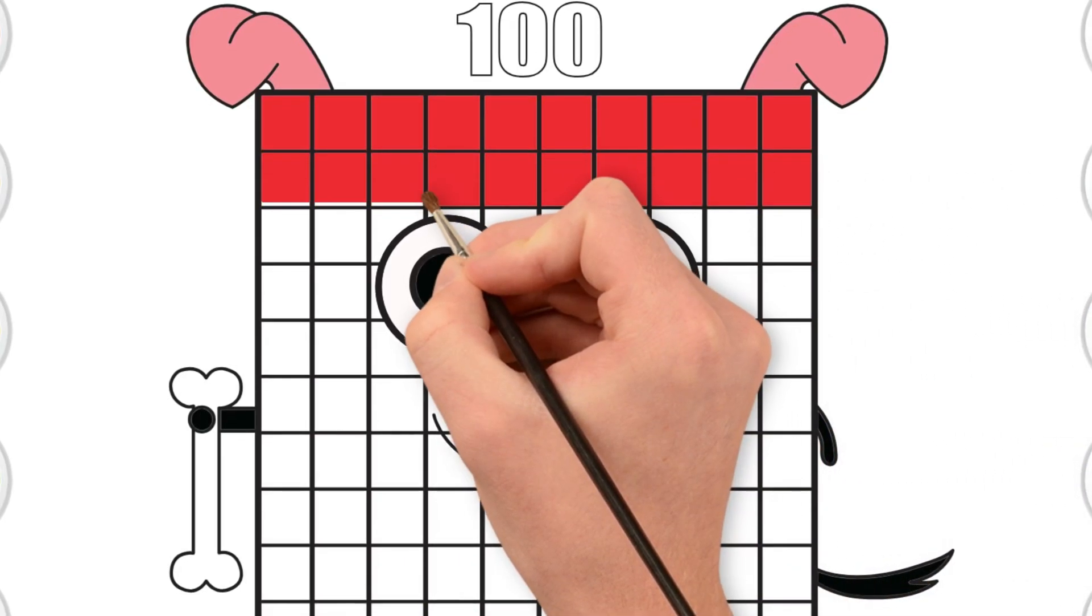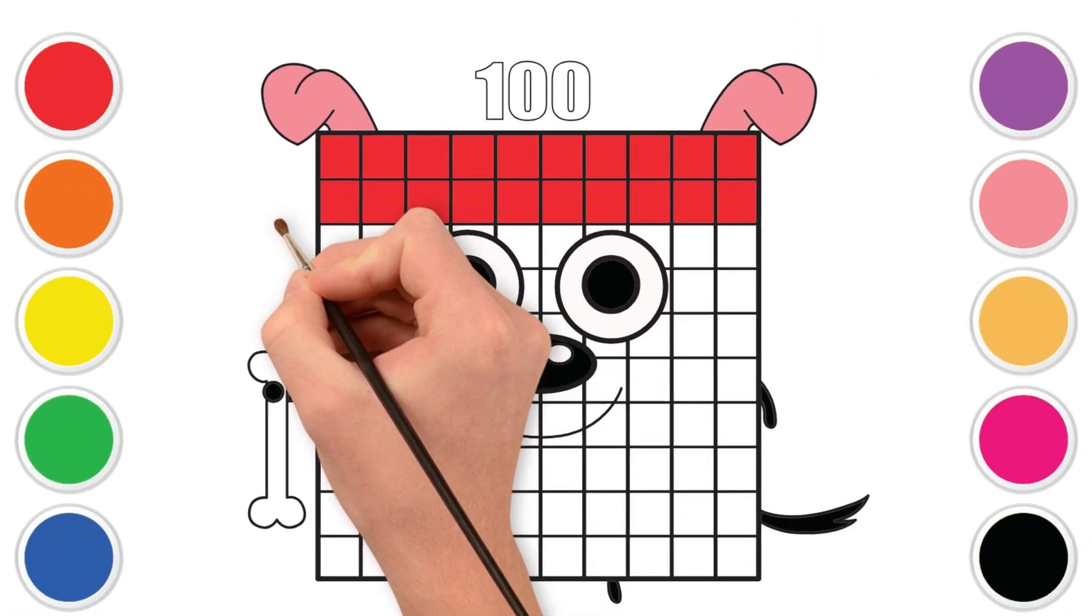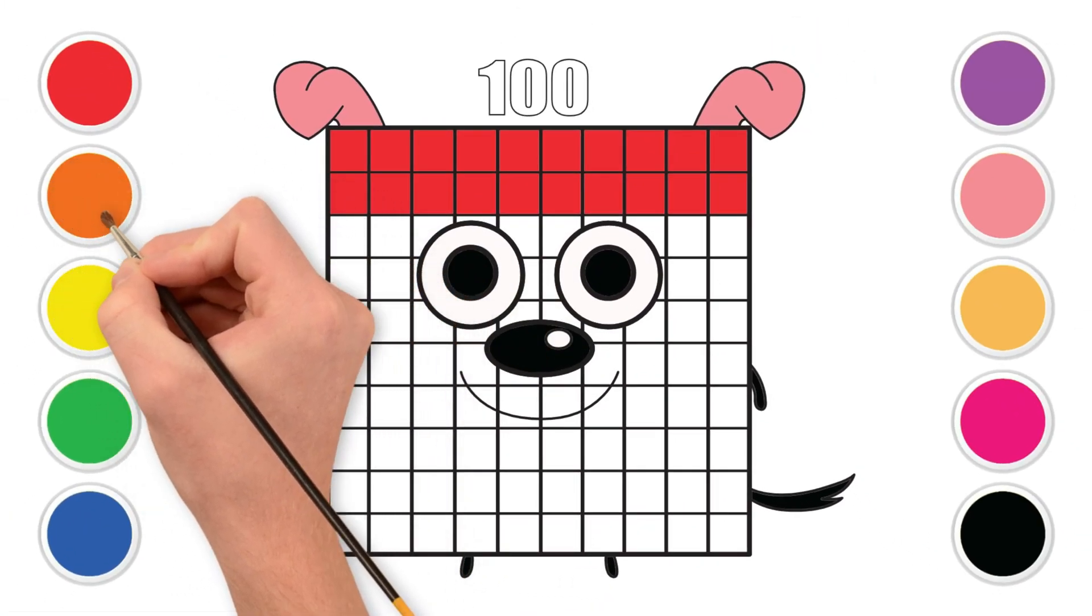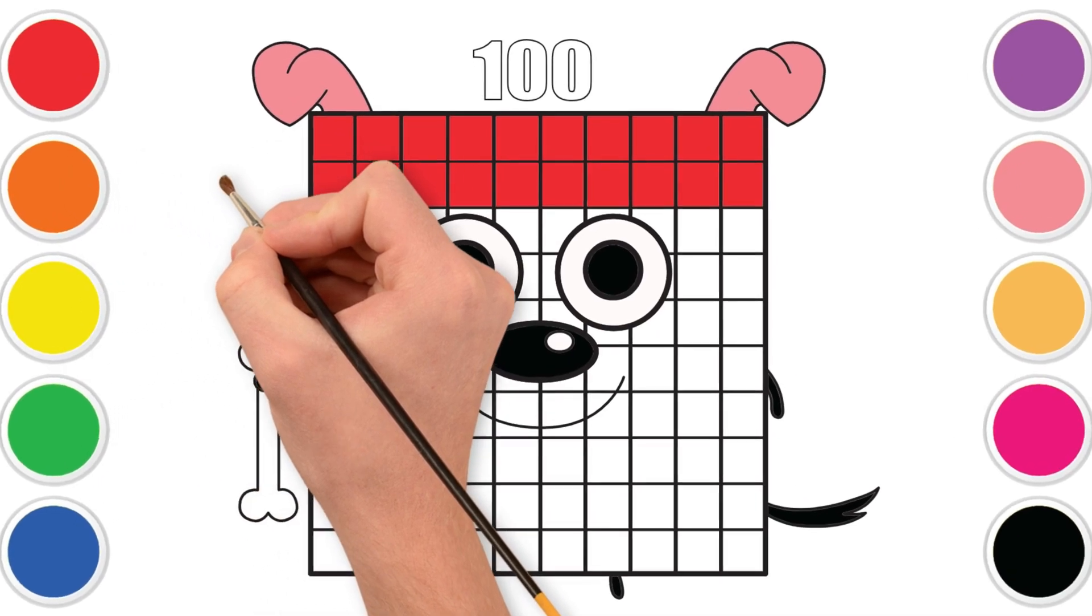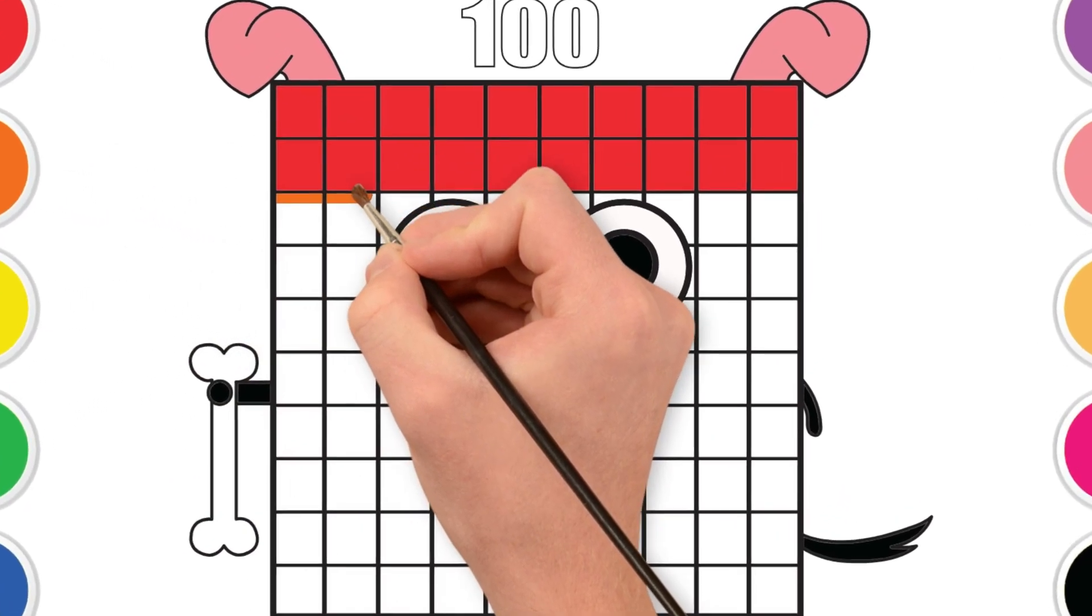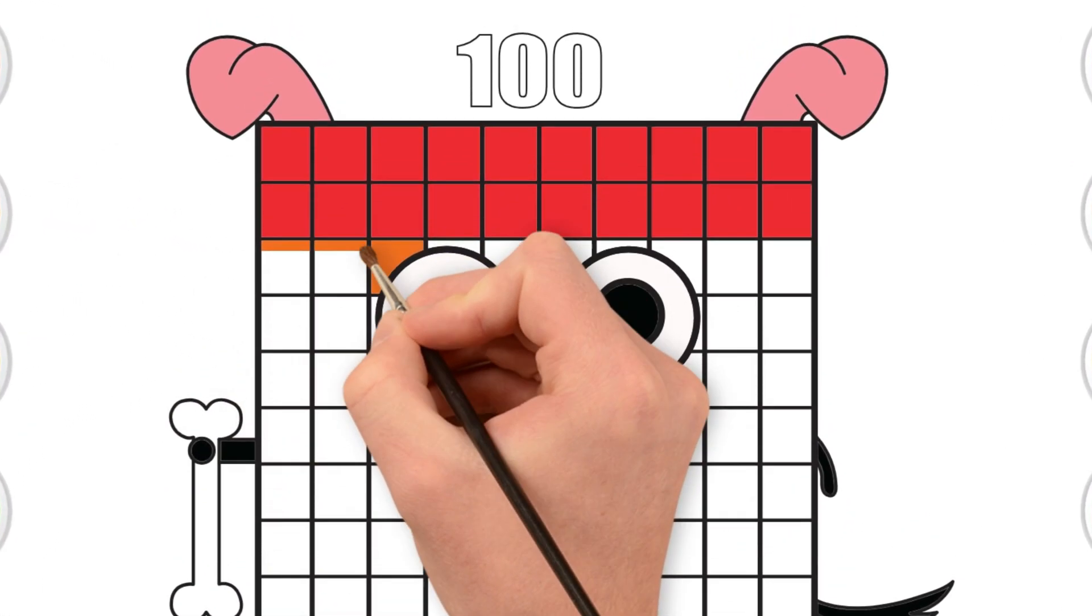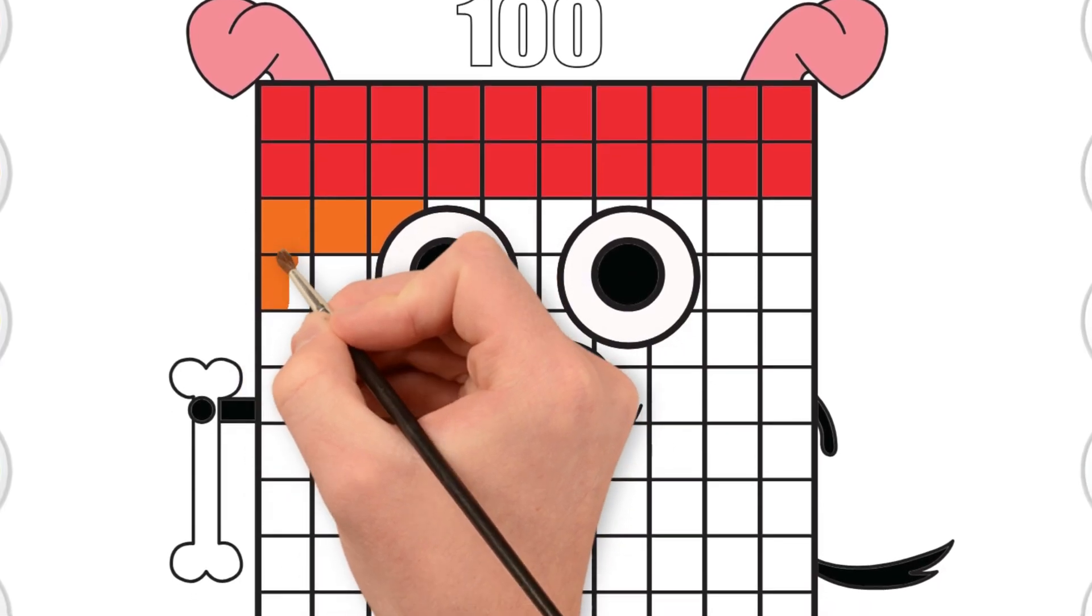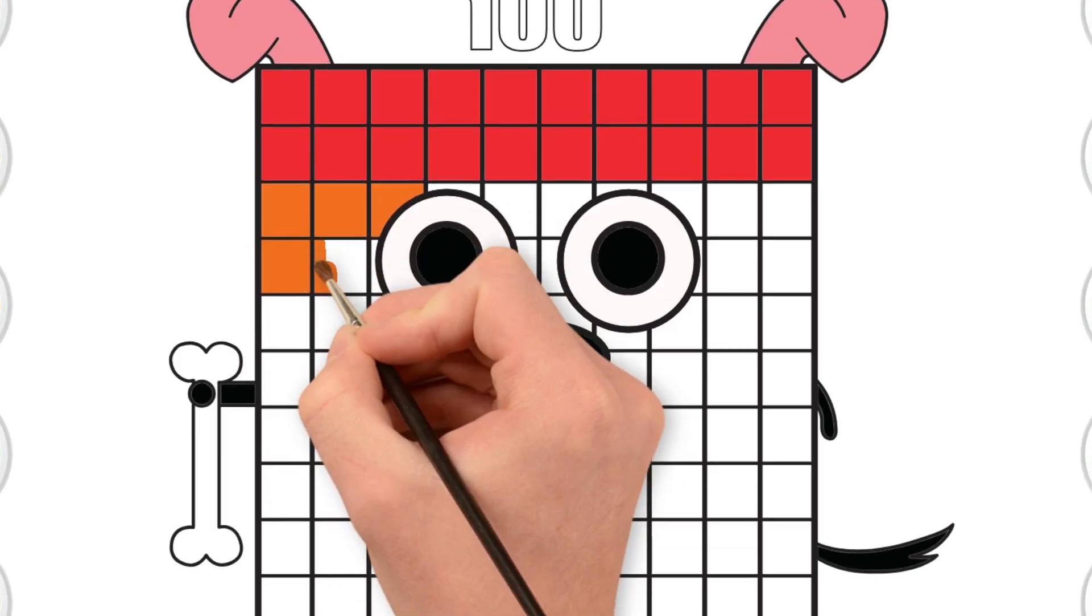Can you clap your hands two times for the two rows of red? One, two. That's twenty red squares. Two groups of ten. Now take orange. O, R, A, N, G, E.